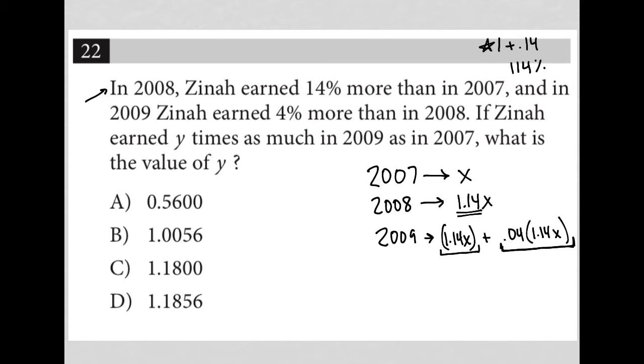In essence, it's this stage here that I did earlier in breaking down the 114%. Okay, so that's 2009. If Xena earned Y times as much in 2009 as in 2007, what is the value of Y? So basically we're saying X times Y is equal to 2009. But we know that also 2009 is equal to 1.14X plus 0.04 times 1.14X.